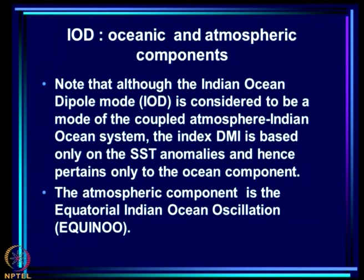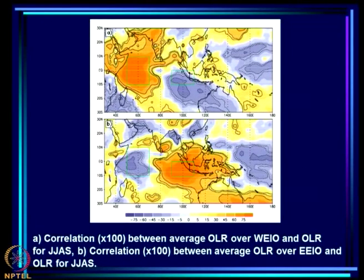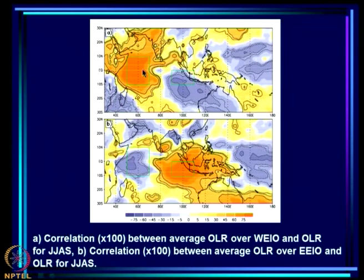The atmospheric component of this Indian Ocean Dipole Mode is the equatorial Indian Ocean oscillation, or what we call EQUINOE. Suppression of convection over the eastern equatorial Indian Ocean tends to be associated with enhancement of convection over WEIO and vice versa. What you see here is the correlation between the average OLR of WEIO with OLR everywhere, and you can see that the OLR here is highly positively correlated with OLR here, so rainfall here would be highly positively correlated with rainfall here. More importantly, there is a seesaw in convection between the west and the east.